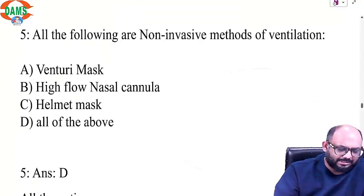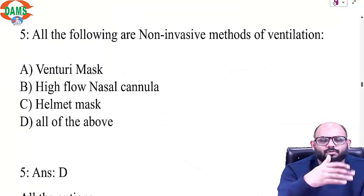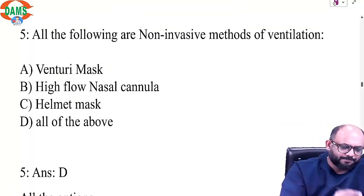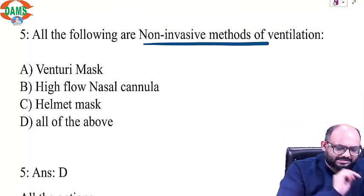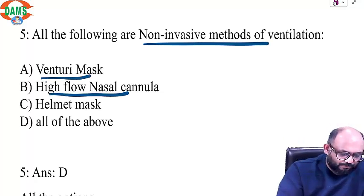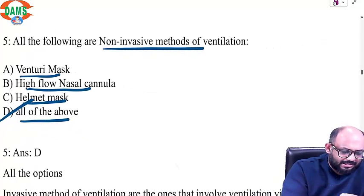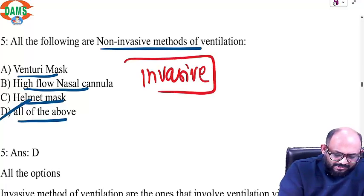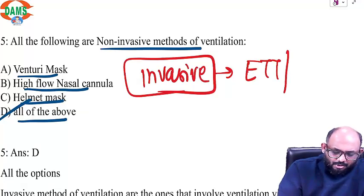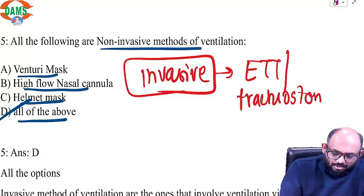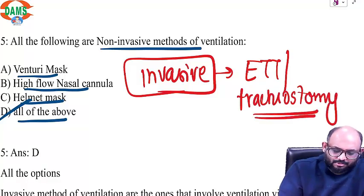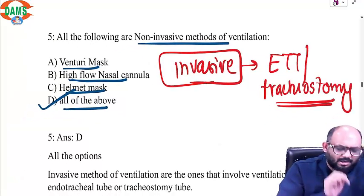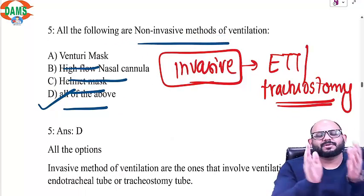We also have a question about non-invasive methods of ventilation: Venturi, high flow nasal cannula, and helmet mask — all of the above. When we say invasive ventilation, the airway has to be invaded — that is an endotracheal tube or a tracheostomy tube. Apart from those, all other modes of ventilation are non-invasive.